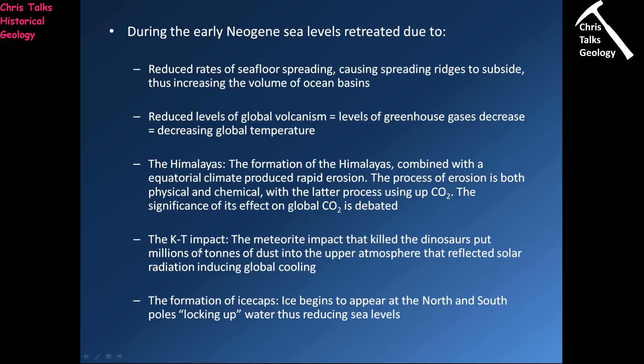We also have the KT impact — right at the end of the Cretaceous, a huge meteorite smashed into the Earth, ending the dinosaurs. It also put huge amounts of dust into the upper atmosphere, which is very good at reflecting sunlight back into space. The Earth received less sunlight and therefore less energy, causing it to cool down. Then we see the formation of ice caps: as the Earth cooled, ice cap formation began at the poles, locking water in ice so it couldn't return to the ocean basins. As water was removed from the oceans and turned into ice, the amount of liquid water in the oceans decreased and global sea levels dropped.